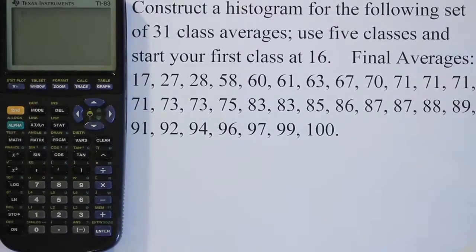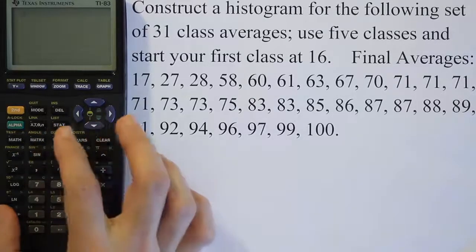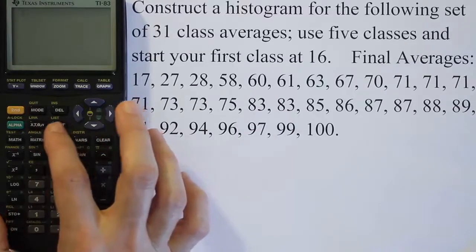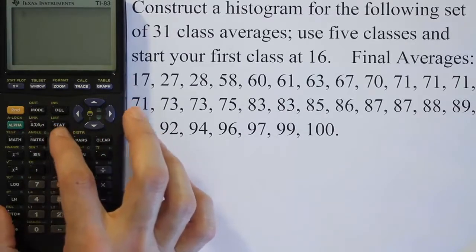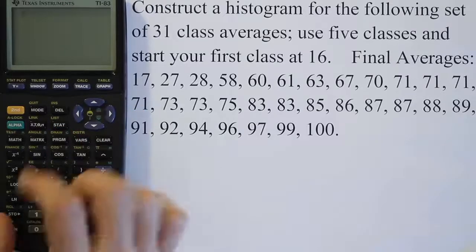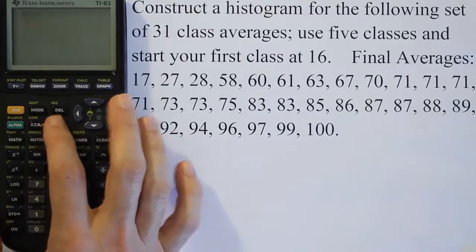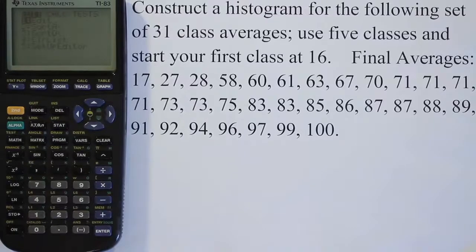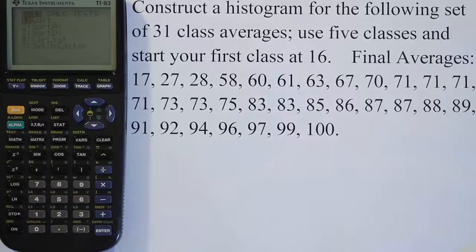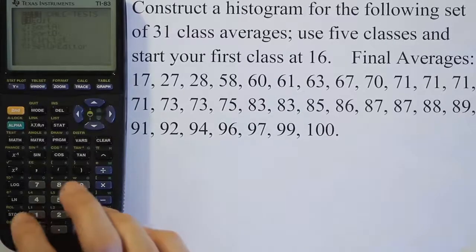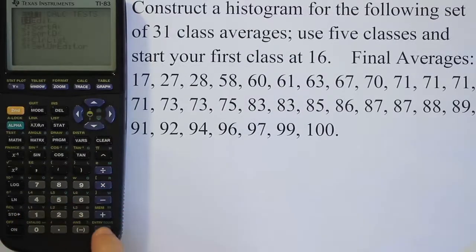The first thing you want to do when you want to construct a histogram using a graphing calculator is to hit the stat key here. That first key that we're going to touch is the stat key. That key becomes very important in statistics overall, so let's get used to hitting it. We'll hit the stat key. When we bring up the screen here, you see the first thing in the list is the word edit. So we just hit the number one, it'll open up for us or we can hit enter. Either one is fine.